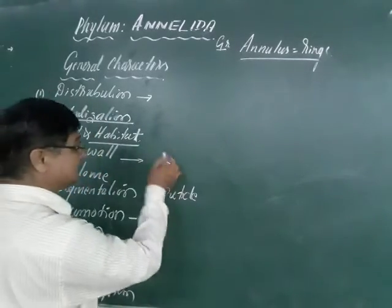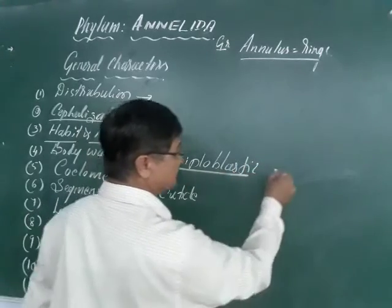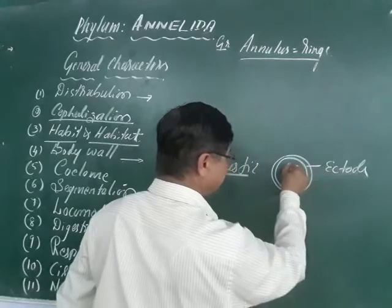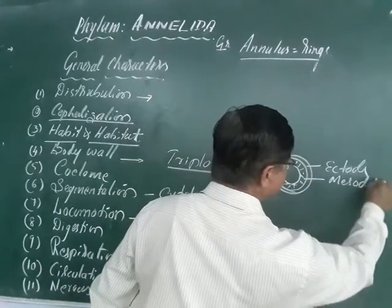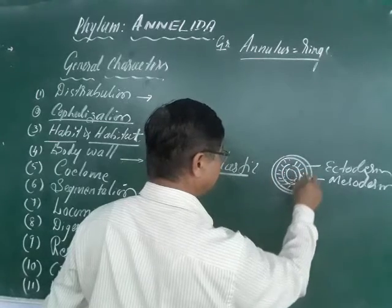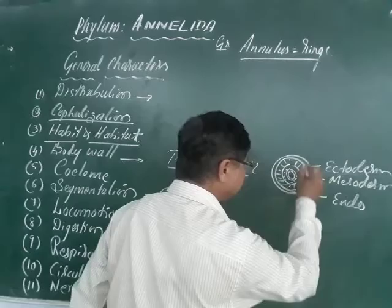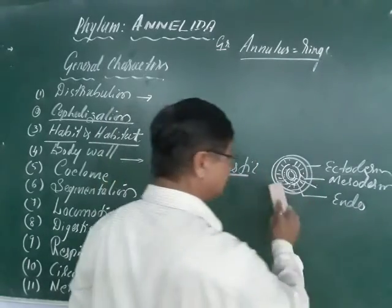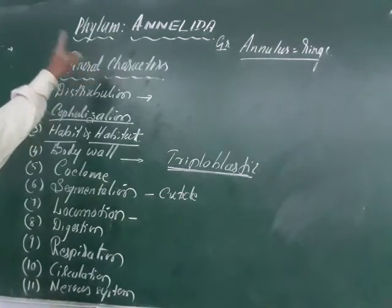Body wall means layers. The body wall is made by three layers. The outermost layer is called the ectoderm, the middle layer is called the mesoderm, and the inner is called the endoderm.